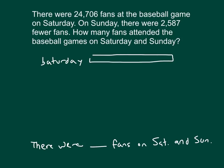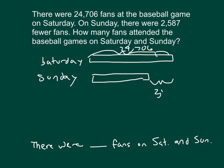So, we'll start with a tape diagram for Saturdays. And Saturday's amount is 24,706. Do we know Sundays? Kind of. It says on Sunday, there were 2,587 fewer fans. Is there more or less on Sunday? Right, there's actually less on Sunday. So, we'll go ahead and draw our bar. And we'll draw it so that that bar is less. And how much less was it? It was 2,587 less. And that's why we label that portion, those fewer fans.